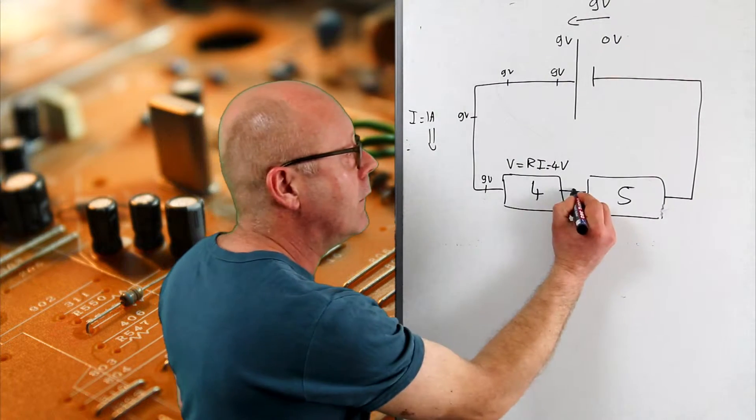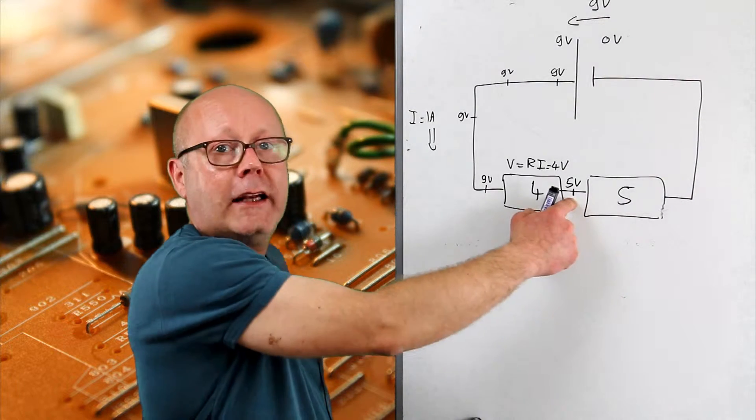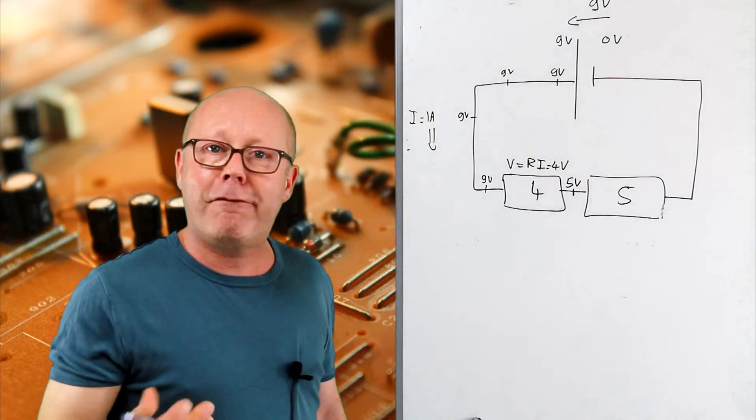Therefore, here, you will have five volts. Each coulomb of charge located at this position will have five joules.